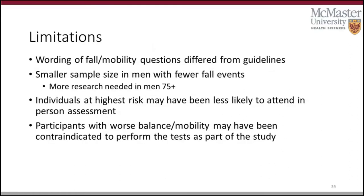Some limitations of our study include that the wording of the fall questions and mobility questions differed from those in fall prevention guidelines. We had a smaller sample size for men, resulting in fewer fall events, and we need more research specifically in men aged 75 and older — a group where falls appeared to be predicted by factors other than balance and mobility. Additionally, individuals at highest risk may have been less likely to attend an in-person assessment, and participants with worse balance or mobility may have been contraindicated from performing the tests, leading to some missing data.